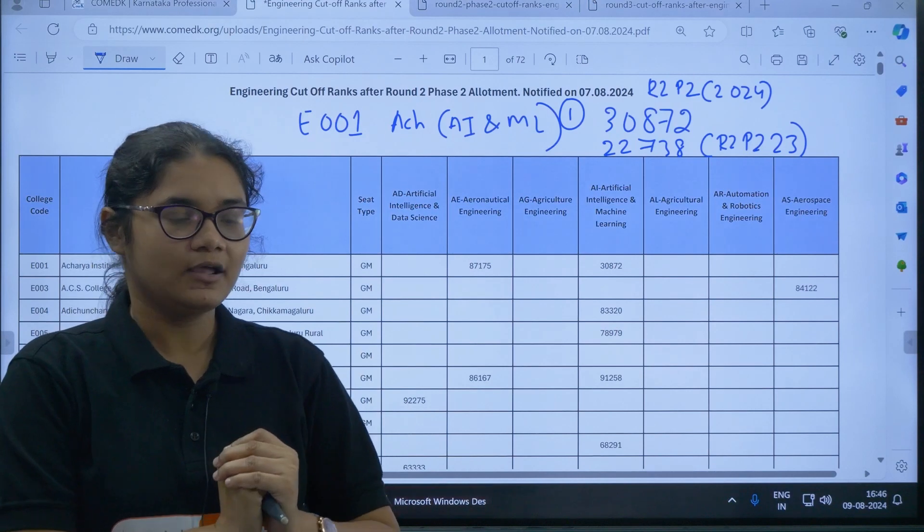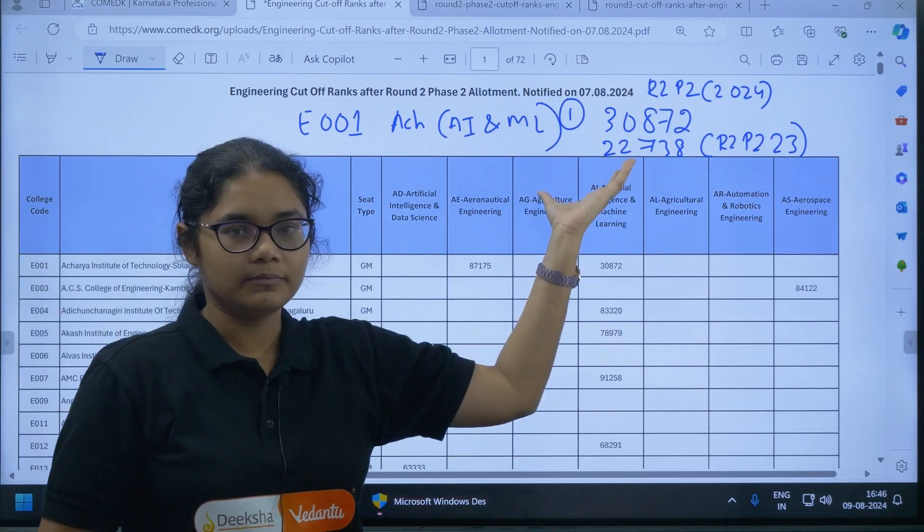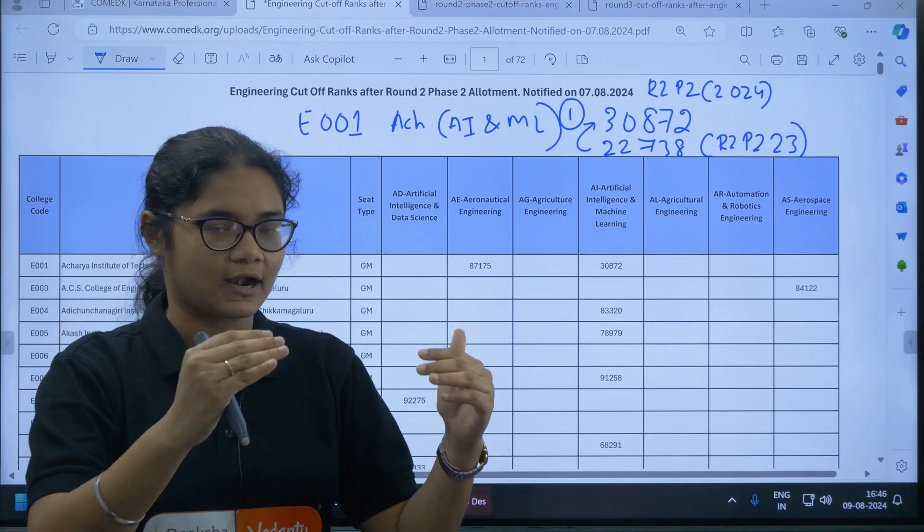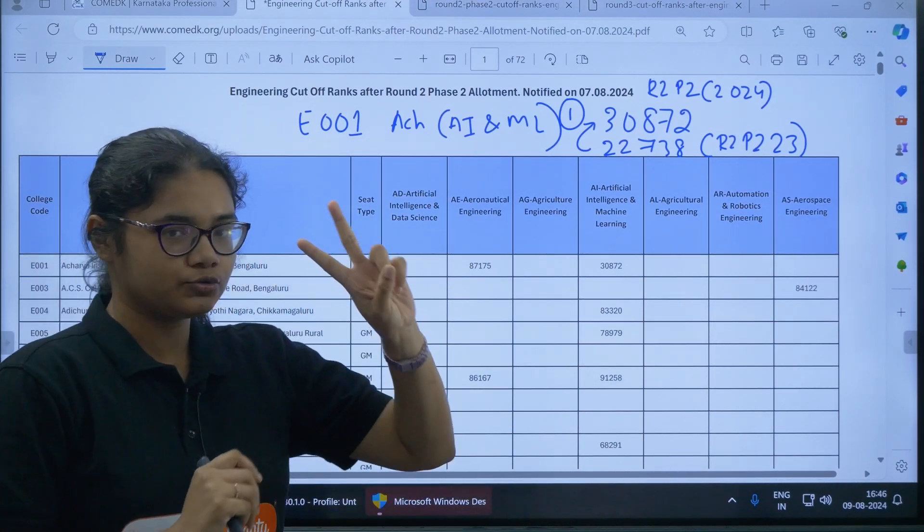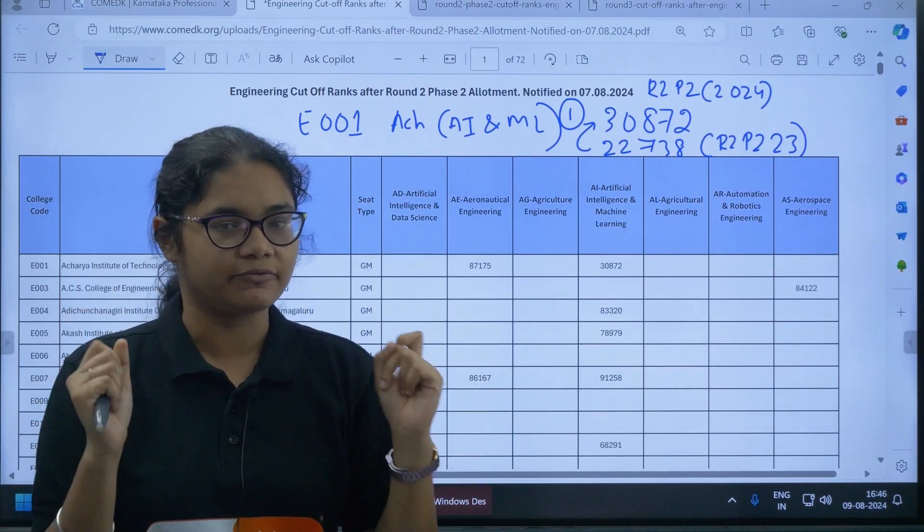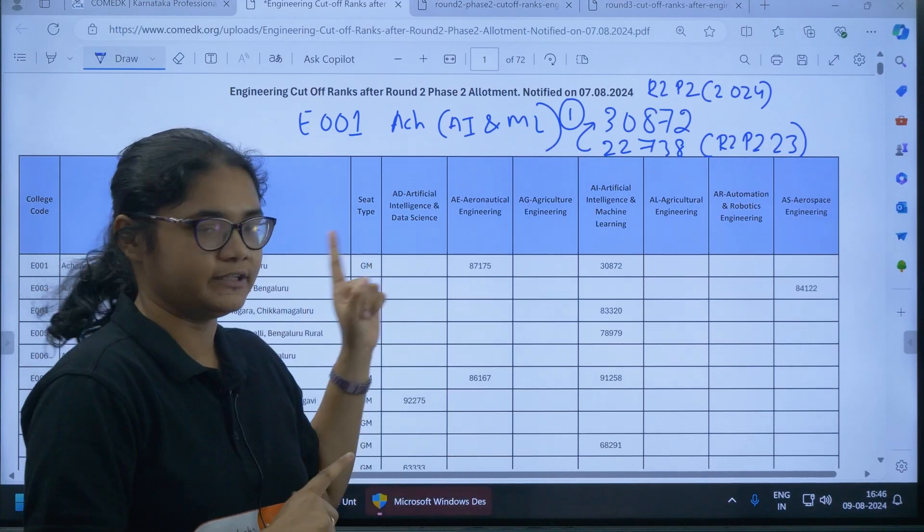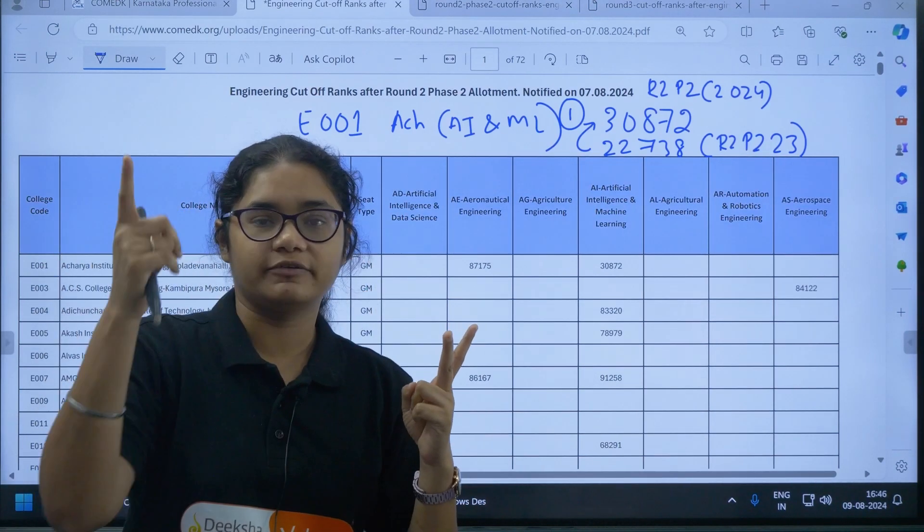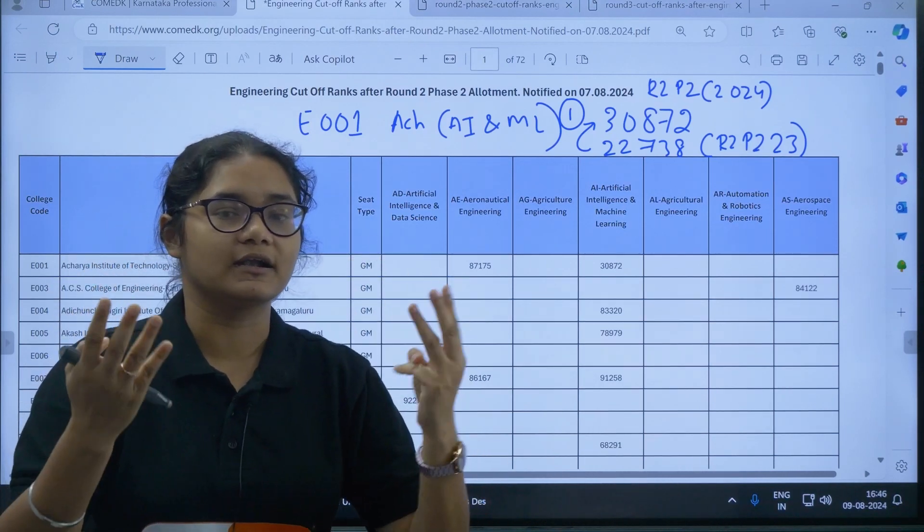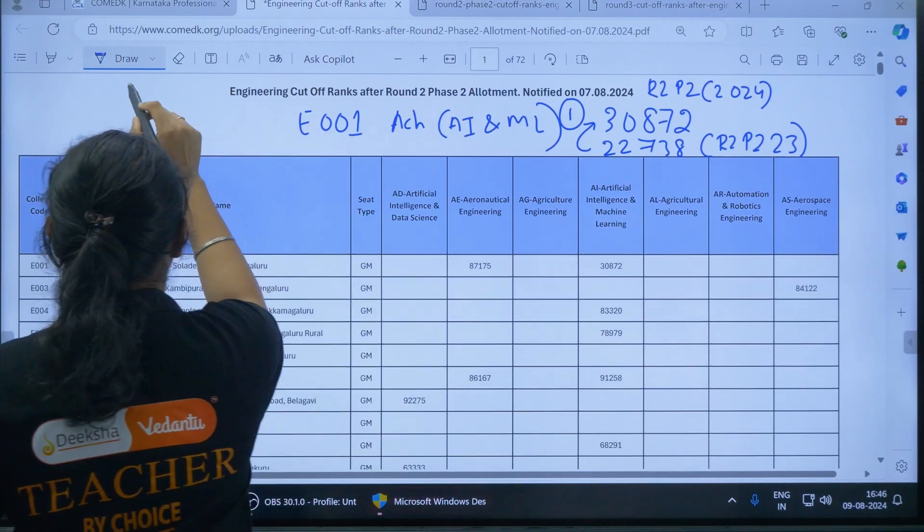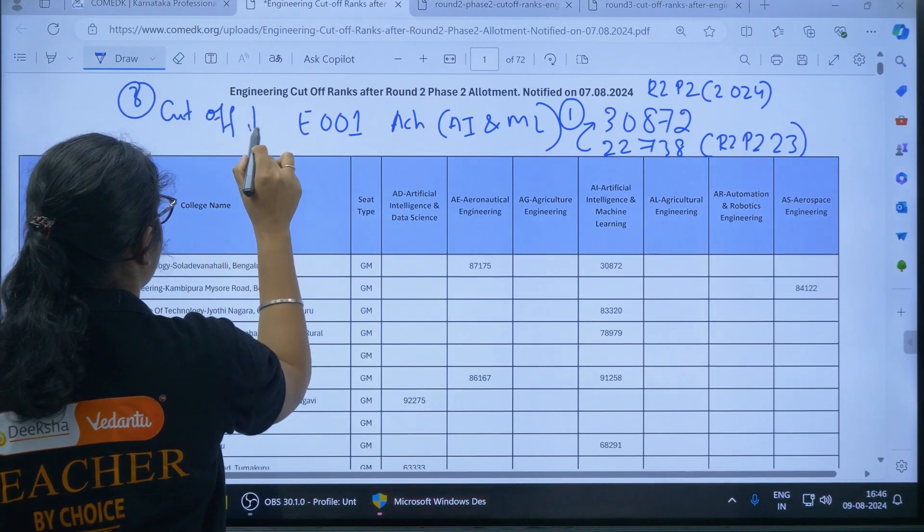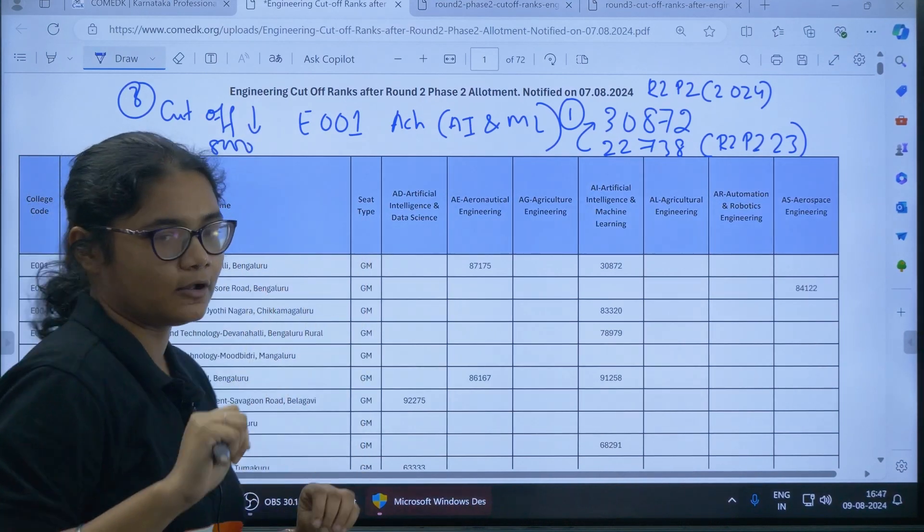So now what trend are you analyzing here? You see the cutoff has gone down, right? From 22,000 to 30,000. So almost you can say by 8,000 the cutoff has come down, by 8,000. So these two things we have done. First step, again let me repeat, whichever is your best preference, the first preference, check its cutoff for Round 2 Phase 2. Second step, compare it with the Round 2 Phase 2 of 2023. Third step, analyze whether the cutoff is going down or has increased. Third step, what we have concluded here is the cutoff has gone down by some 8,000 rank, roughly I can say 8,000 rank.